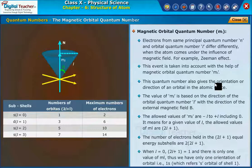When l is equal to 0, 2l plus 1 is equal to 1 and there is only one value of m_l. Thus, we have only one orientation of orbital, that is 1s, which refers s orbital of shell 1.